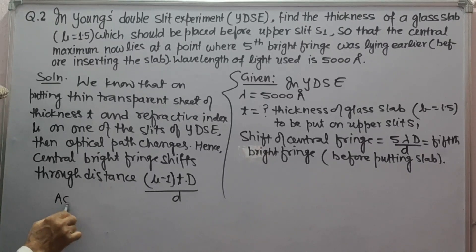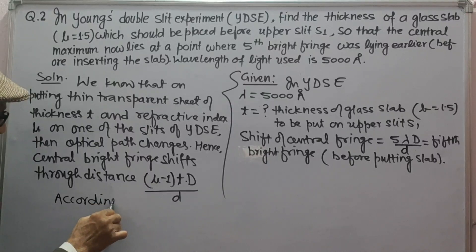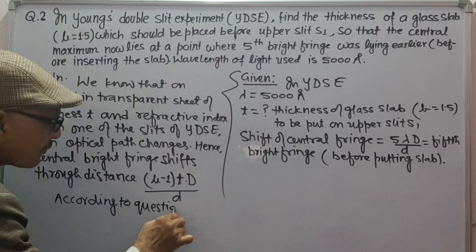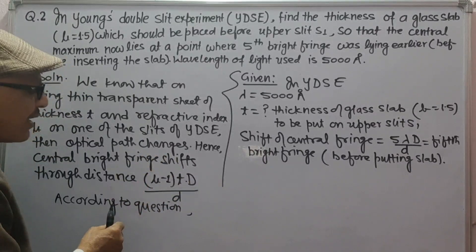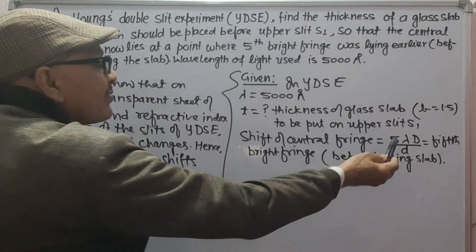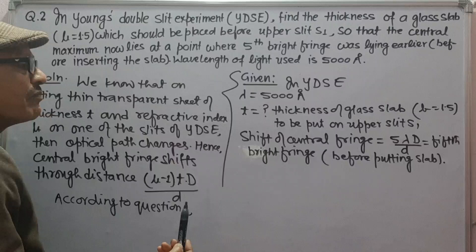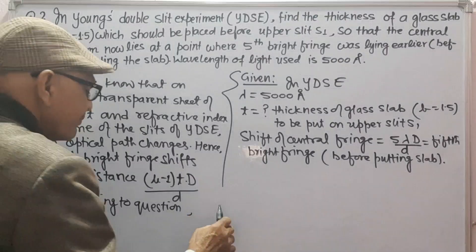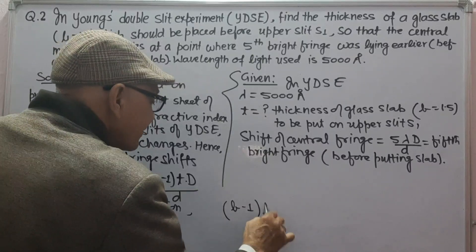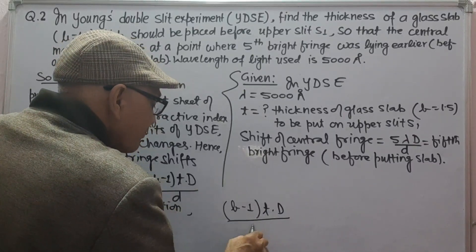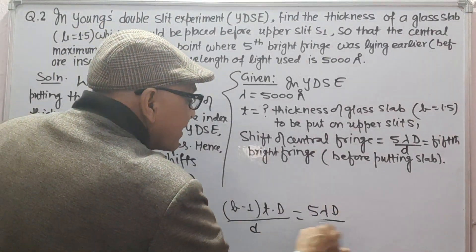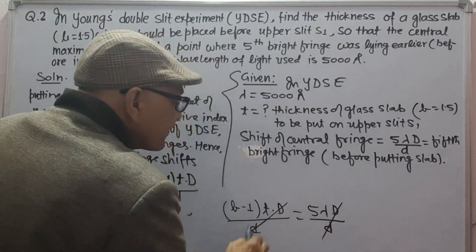According to the question, this shift of the central fringe after putting the glass slab is equal to the distance of the fifth bright fringe initially. So, (mu minus 1) × t × D upon d equals 5 × lambda × D upon d. The D upon d cancels out on both sides.